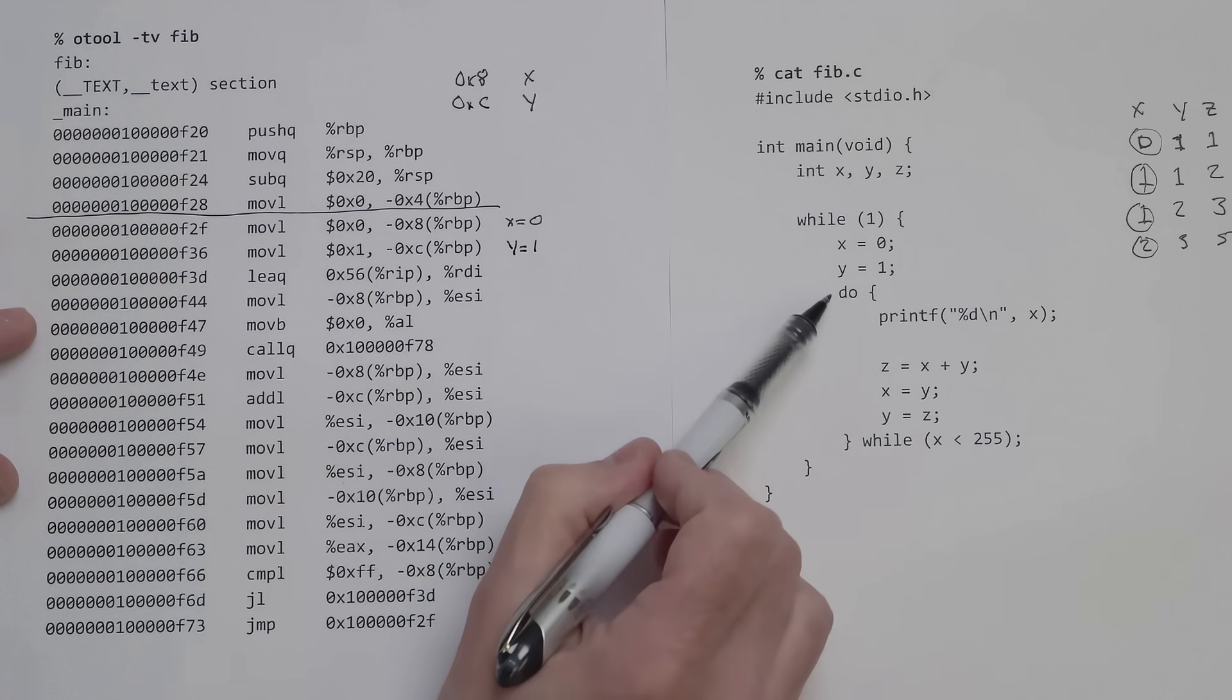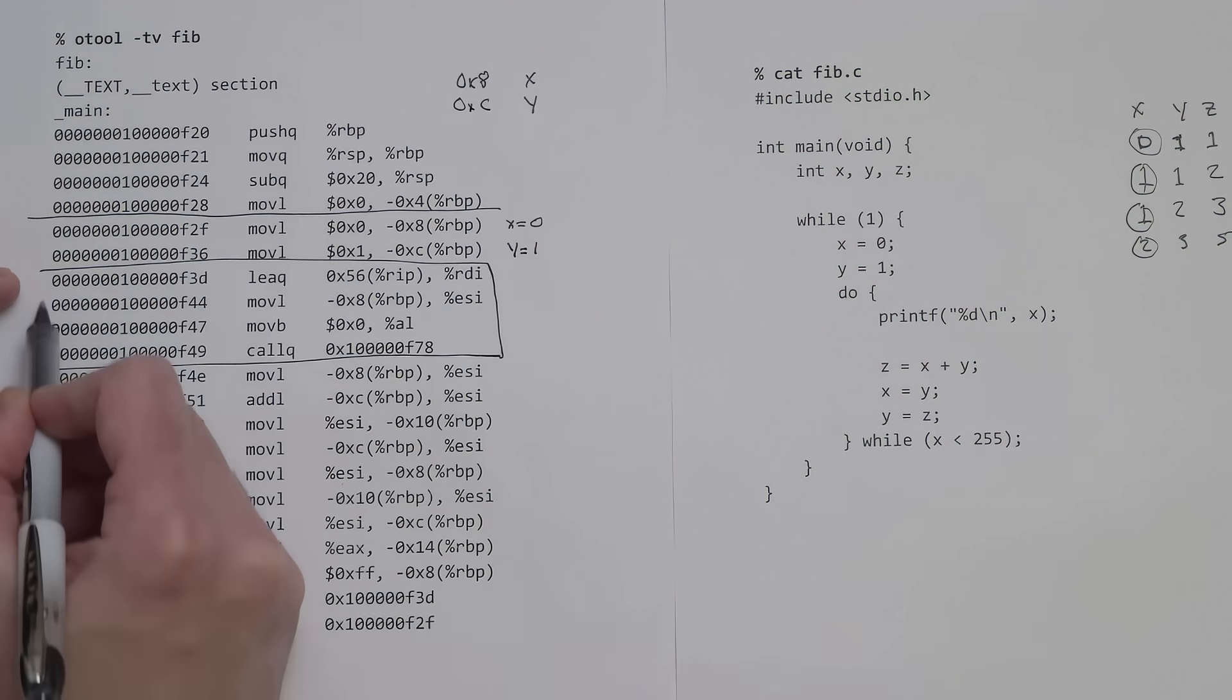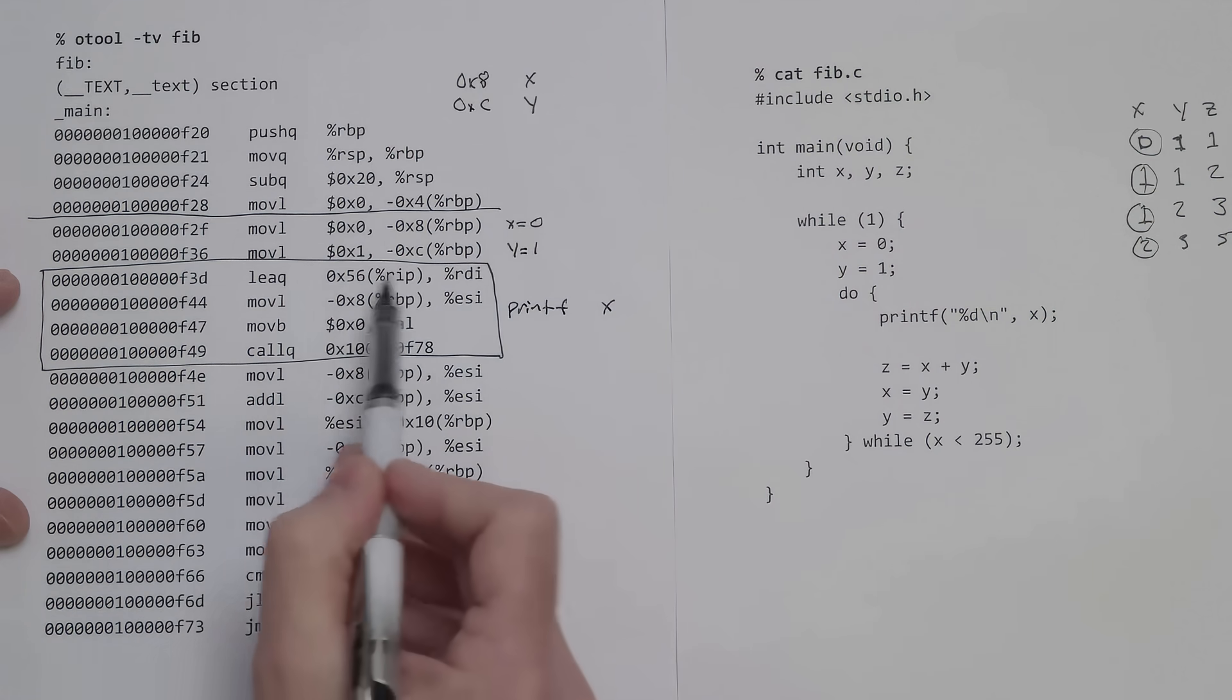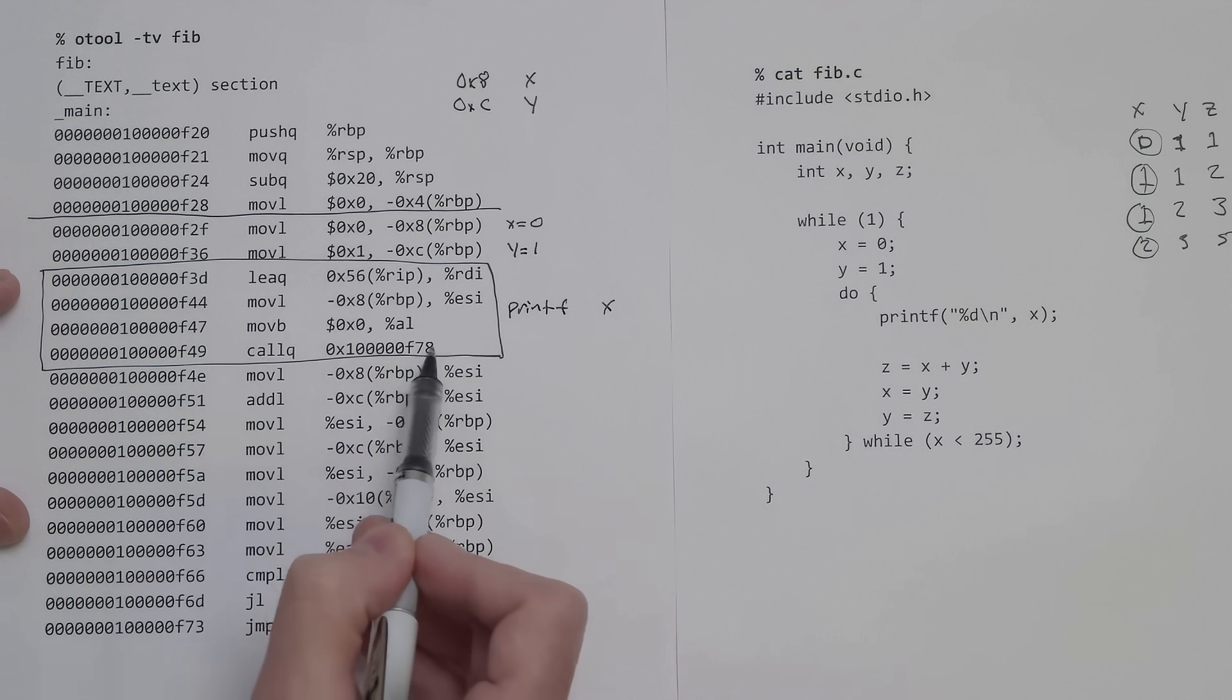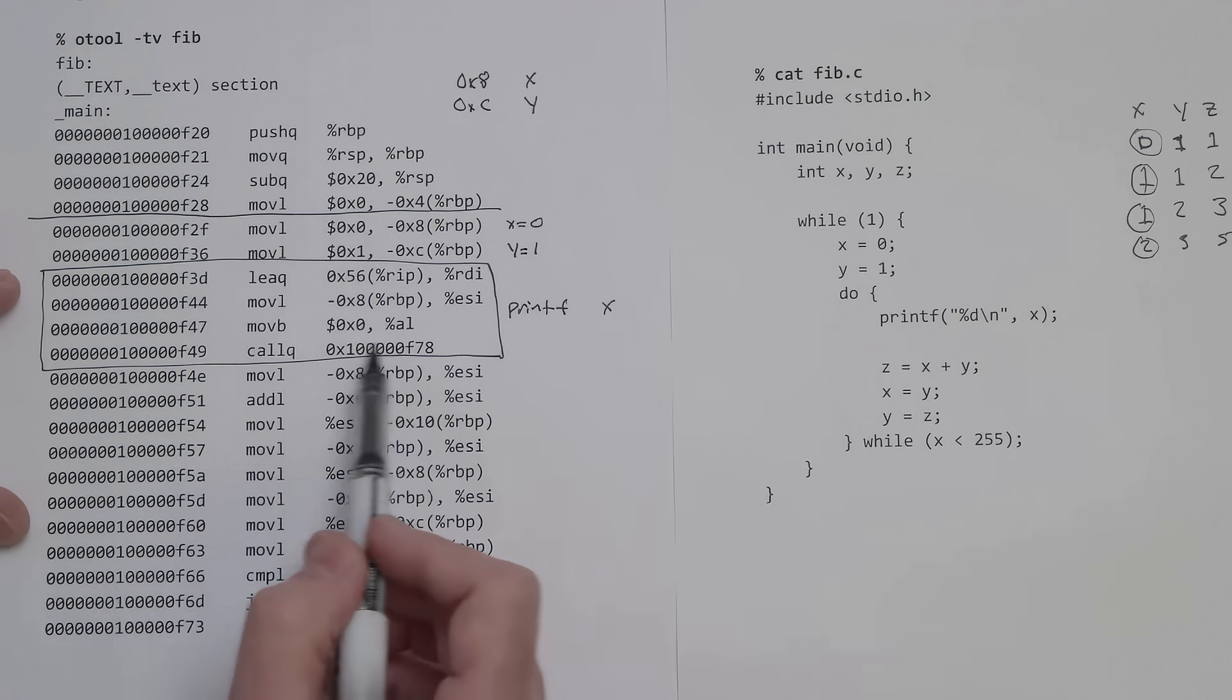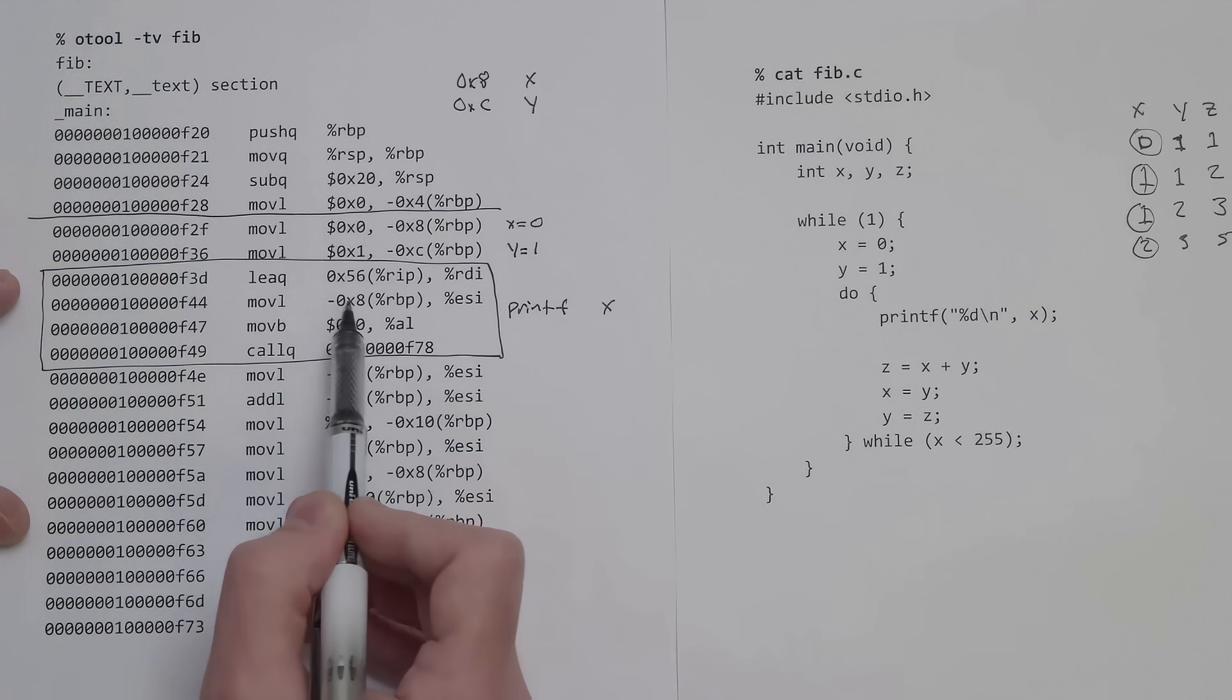Now we enter this loop. The next couple lines have to do with the printf. These four lines are setting up all the things and then calling printf. This is presumably the printf function provided by the C standard library. I think this is probably the address of the string, the %d newline string.